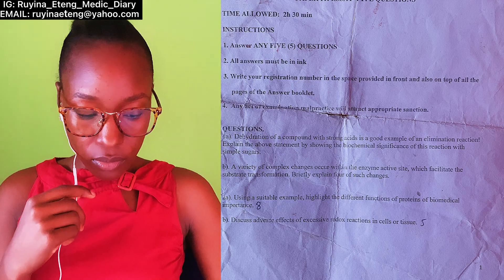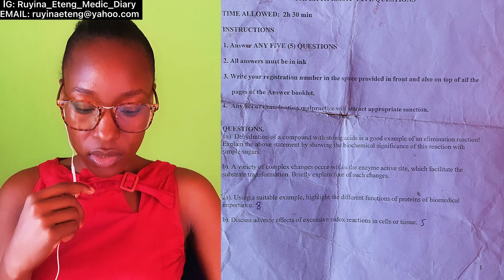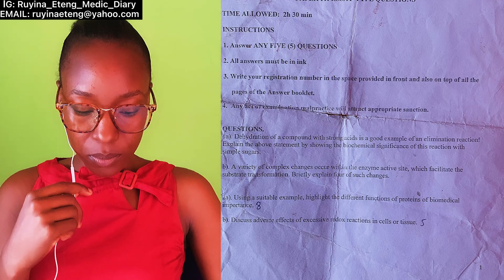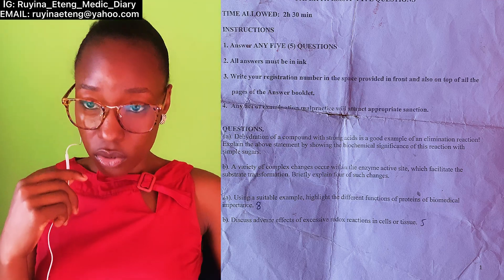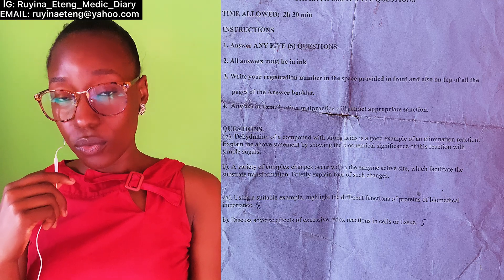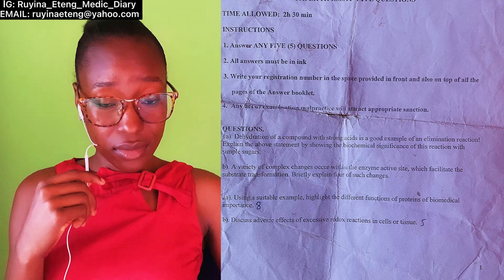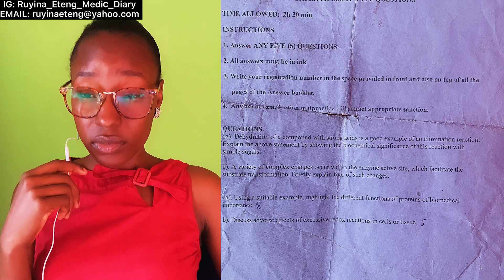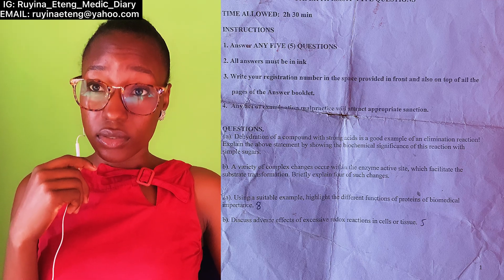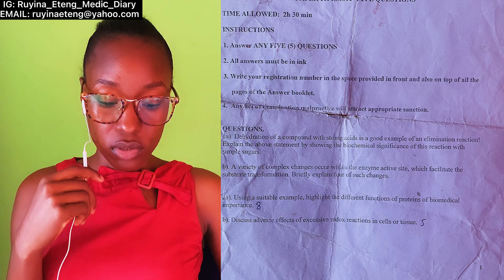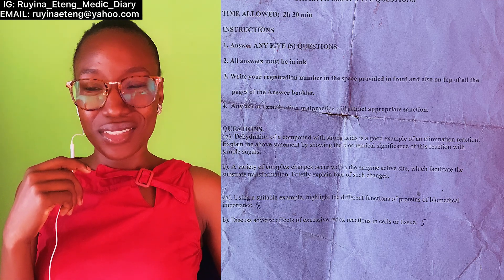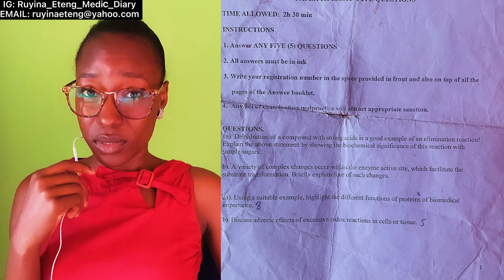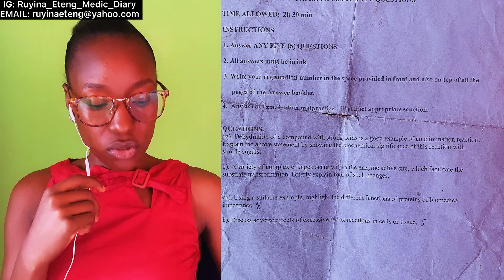For question 1B, it asked: 'A variety of complex changes occur within the enzyme active sites which facilitates substrate transformation — briefly explain four of such changes.' Unfortunately, we were not taught this, and I don't know why the lecturer brought it out for a full 10 marks. I personally did not answer question one because of this. I later found that junior colleagues were taught it via a lecture slide with just four changes and small explanations.